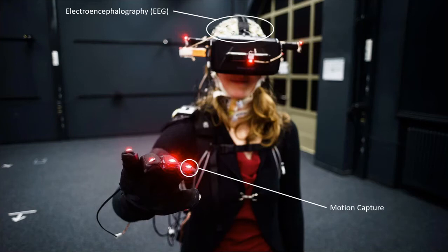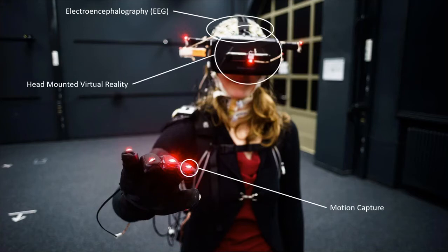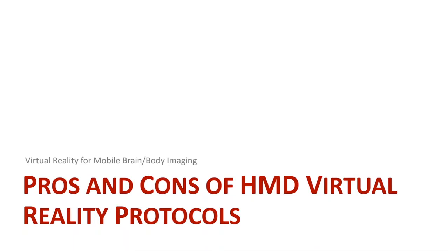With synchronized brain dynamic recordings and motion capture, we can investigate how brain dynamics control behavior and how behavior impacts brain dynamics. We use experimental protocols — often head-mounted virtual reality — to have absolute control over our events and the factors we want to manipulate, while participants are still able to move around more or less naturally. This is the huge advantage of VR as a protocol in mobile brain-body imaging experiments. Before I dive into pros and cons, let's start with the first poll.